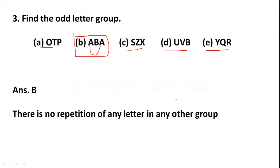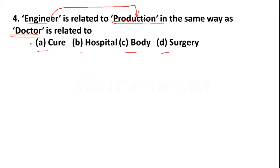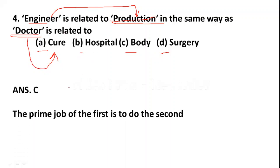Question 4: Engineer is related to Production. In the same way, Doctor is related to — Option A: Cure, Option B: Hospital, Option C: Body, Option D: Surgery. The main work of an engineer is production, so the main work of a doctor is to cure the patient. Option A is the right answer. Please make a correction — it is Option A, not C.